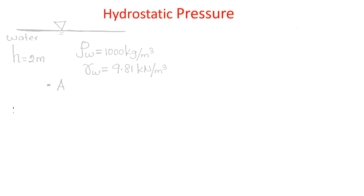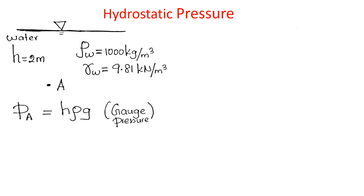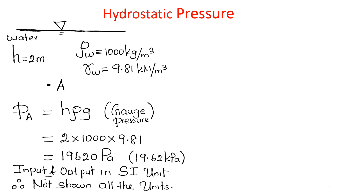Hydrostatic pressure: Point A is 2 meters below the water surface. What is the gauge pressure at A? Gauge pressure means atmospheric pressure is taken as datum. P_A equals H·ρ·g equals 2 times 1000 times 9.81 equals 19,620 Pa, or 19.62 kPa. Input and output are in SI units.